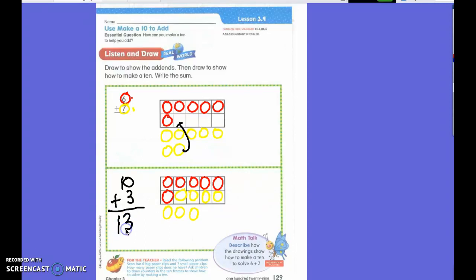So, if 10 plus three equals 13, then six plus seven must equal... Thirteen. Thirteen. Did that make that number sentence a lot easier? Yeah.